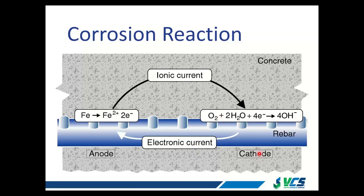Those are the four primary parts of the corrosion reaction. The key thing to take away is that the anode is where the section loss occurs, and the cathode has no section loss. When we start talking about cathodic protection and corrosion mitigation, really what we're talking about is making everything the cathode on our structure so there won't be any section loss. We'll get into that as we move along.